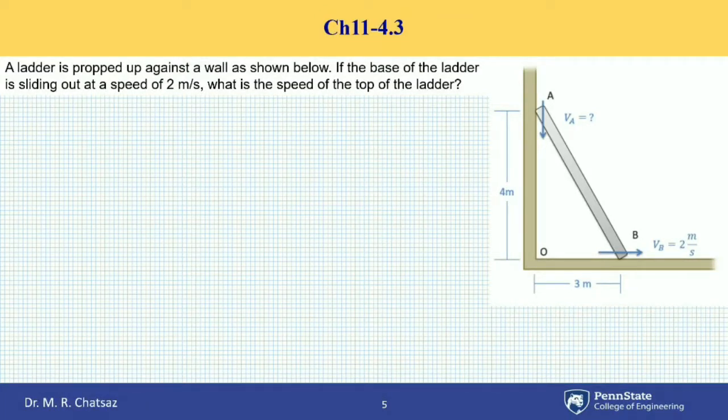Here we have a ladder that is supported by the wall and the floor as shown. For the position shown, velocity of end B of the ladder is 2 meters per second. We're interested in finding velocity of top point A.